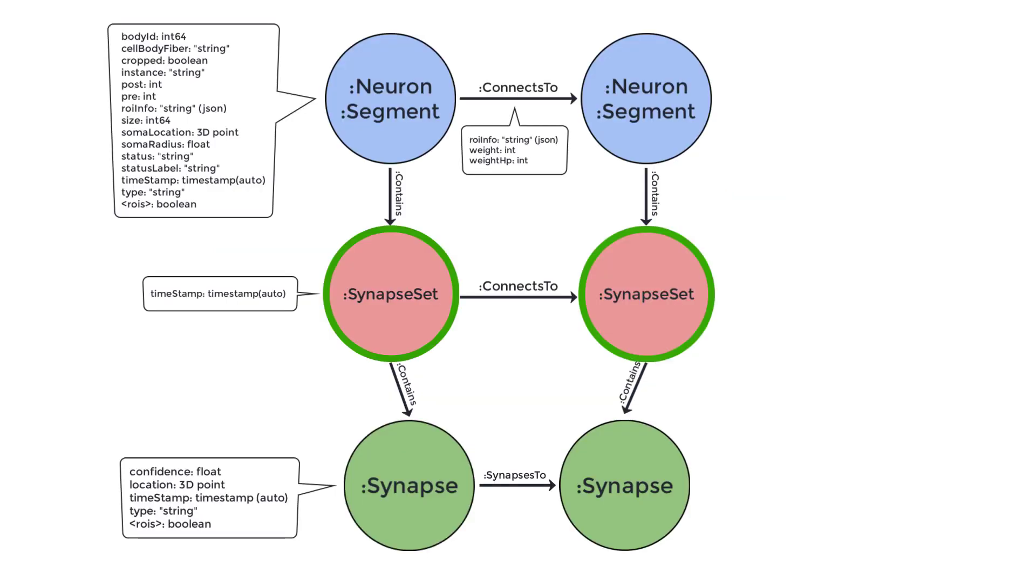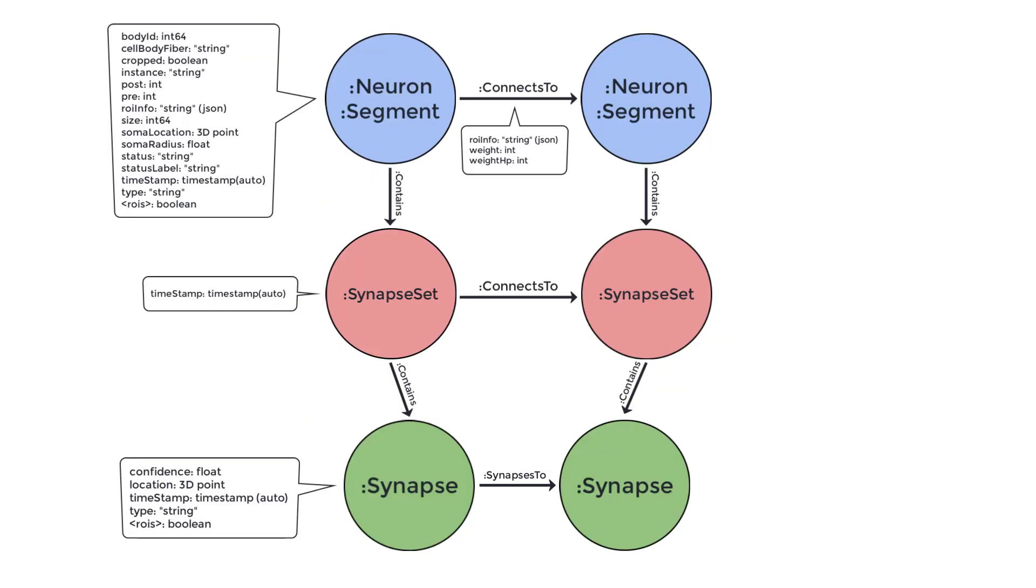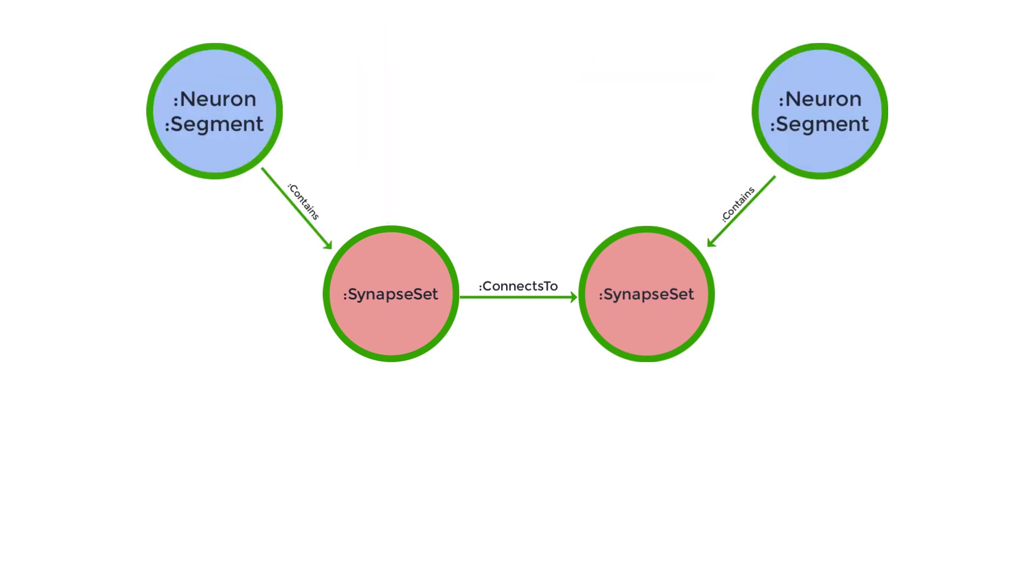The red nodes are synapse set nodes. Each neuron node contains synapse set nodes. Each synapse set contains only the synapses on the starting neuron that connect to one specific partner. This means that each neuron node will have multiple synapses. In fact, it will have the same number of synapses as it has connecting neurons. We now can turn this path from one neuron to another into the match statement.